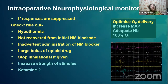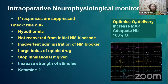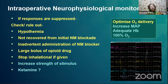Intraoperatively, if evoked potential responses are suppressed: if uniformly suppressed in all limbs, check and rule out hypothermia, check whether the patient has not recovered from the initial muscle relaxant, check if inadvertently a large bolus of opioid has been given, and stop inhalational agents if being given. Optimize oxygen delivery, increase MAP, and give 100% oxygen. Ensure adequate blood supply to the spinal cord.